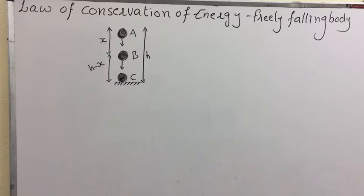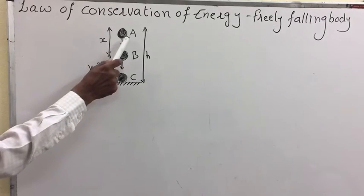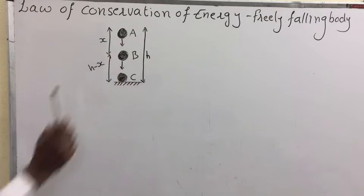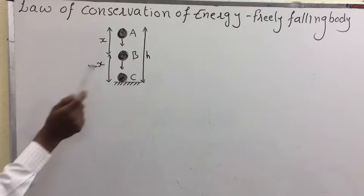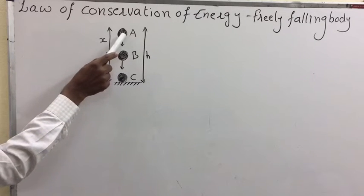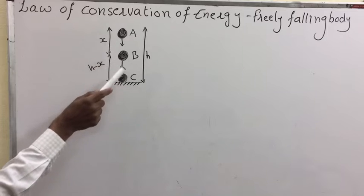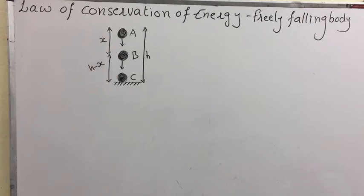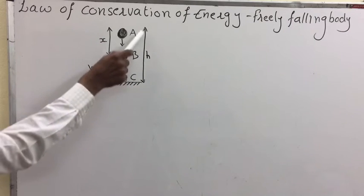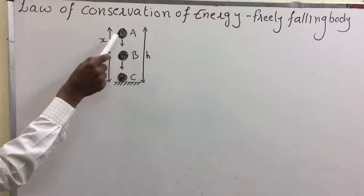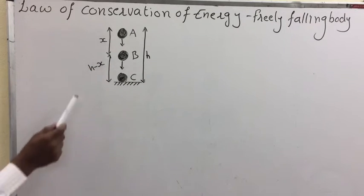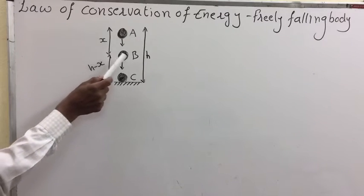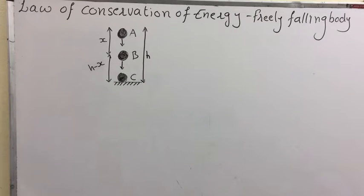To prove the law of conservation of energy in the case of a freely falling body, consider an object of mass m at point A at height h from the ground. As the object freely falls, it moves from point A to B, then B to C. We have to prove total energy is constant at points A, B, and C. At point B the object has displaced a distance x, so its height is h minus x. At point C the height is zero.